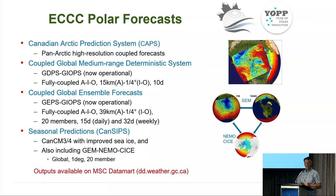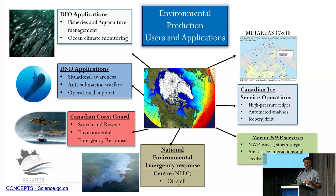Through the following years, we put in place a number of prediction systems to address these situations and other priorities. These included Canadian Arctic prediction systems - Pan-Arctic high-resolution coupled forecasting systems, as we've heard mentioned in a few presentations. We also had a global medium-range prediction system that's now actually operational for our three-to-five day forecast, a coupled ensemble prediction system going out to 32 days, and some seasonal predictions.